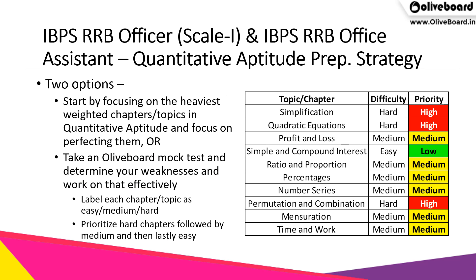Coming to the most important part — the preparation strategy for quantitative aptitude for IBPS RRB exams. You have two options: you can start by focusing on the heaviest weighted chapters and perfecting them, or you can take an Olive Board mock test, determine your weaknesses, and work on them effectively. You can create a checklist with all topics labeled by difficulty — hard, medium, or easy — and by priority.